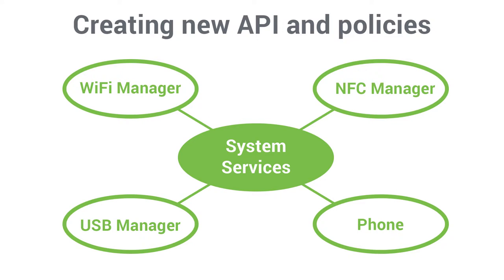For this we will implement a system service which will have one method — "is feature restricted" — which will indicate if a feature like Wi-Fi, Bluetooth, or USB file sharing is allowed for a specific app. Disabling such features as Wi-Fi, NFC, USB, etc. all have something in common.